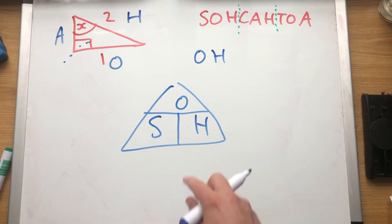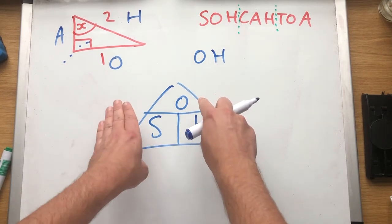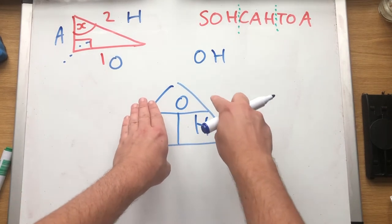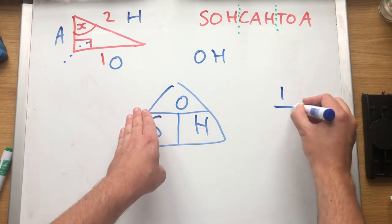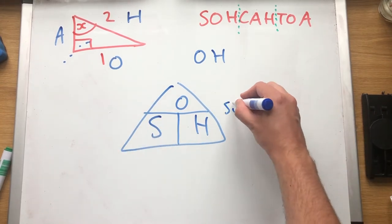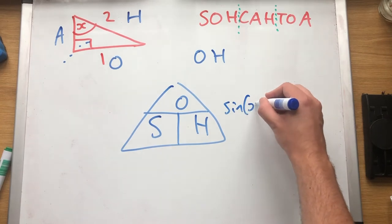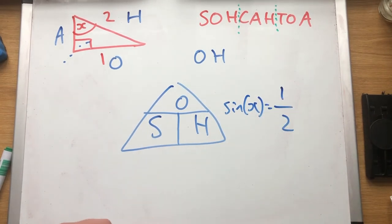Then what we do is we're looking for the angle, so we're looking for sine angle, and we do O over H. So 1 over 2, so sine, and then the angle x equals 1 over 2.